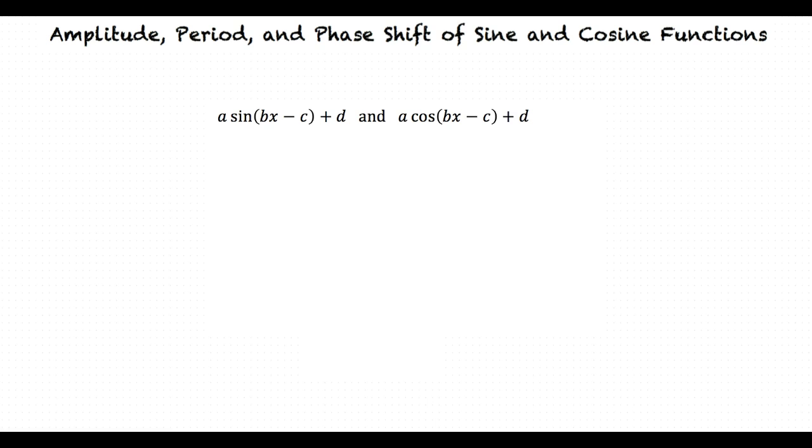the amplitude is the absolute value of a, the period is 2π divided by b, and the phase shift is c divided by b. If c is positive, the horizontal translation is to the right. If c is negative, the horizontal translation is to the left.